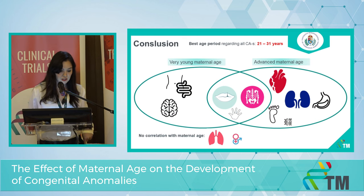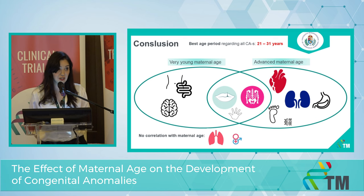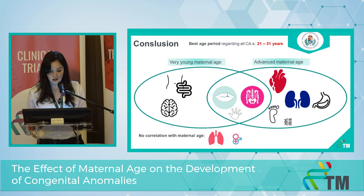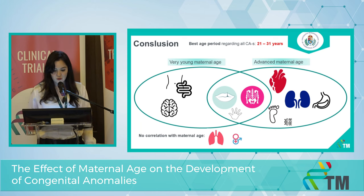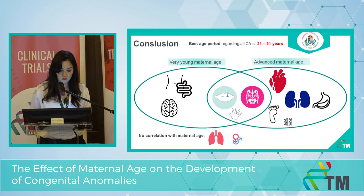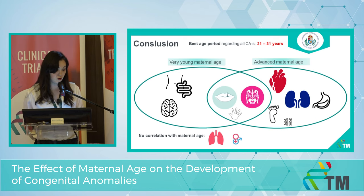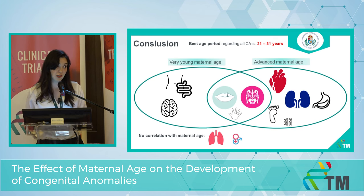On this figure, you can see examples of congenital abnormalities which are more frequent at very young or advanced maternal age categories. Some congenital abnormalities showed a higher frequency in both groups — for example, cleft lip and cleft palate and musculoskeletal system diseases. And there are some cases where we couldn't find correlation with maternal age, for example, respiratory system or genital organ system abnormalities.